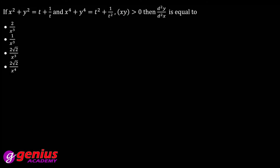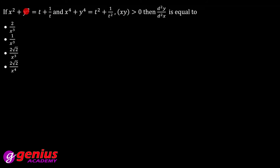Last question: x² + y² = t + 1/t aur x⁴ + y⁴ = t² + 1/t². x, y > 0. Aapko d²y/dx² nikaalni hai. Pehle equation 1 ko square karte hain dono sides se: (x² + y²)² = (t + 1/t)².